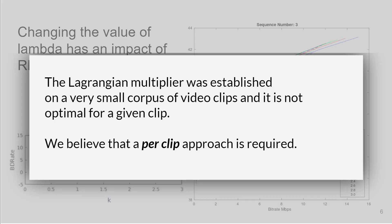We do see some change in performance and we don't believe this means the Lagrangian multiplier established was wrong. We believe that because it was established on a very small corpus of video clips, it's not optimal for a given clip and we could possibly optimize this on a per clip approach.